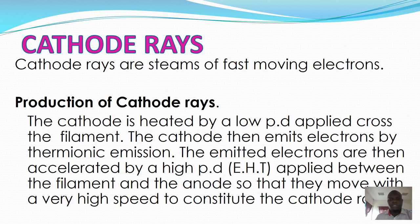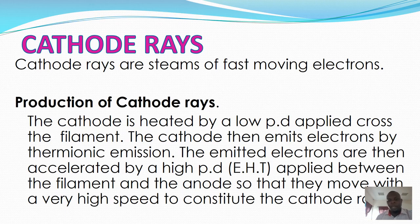Cathode rays are streams of fast-moving electrons. Cathode rays are produced when a metal surface is heated with a very low PD across the filament. The cathode then emits electrons by the process of thermionic emission. The emitted electrons are then accelerated by a high PD or high voltage applied between the filament and the anode so that they move at a very high speed. This constitutes cathode ray production.